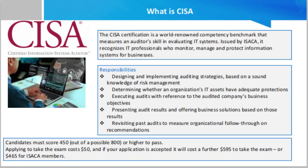The CISA exam previously ran in June, September, and December every year. Candidates must score 450 out of a possible 800 or higher to pass. You can take the exam up to four times per year starting with the date of your first attempt. ISACA currently offers the exam in English, Chinese, and many other languages.